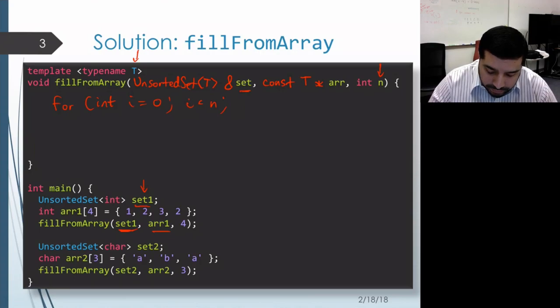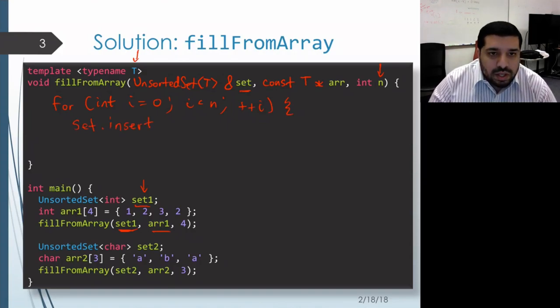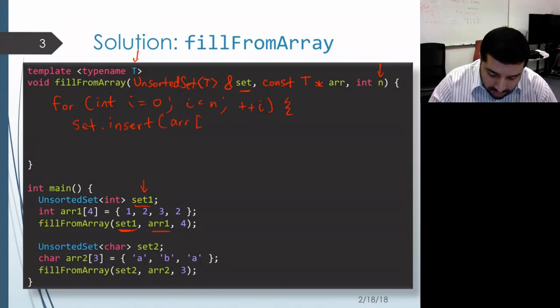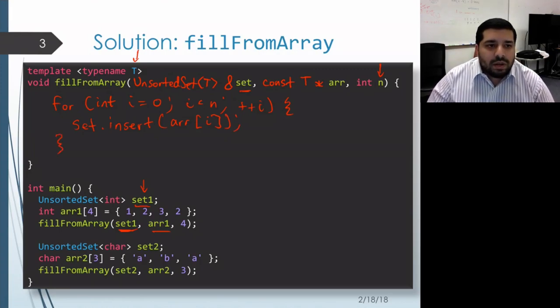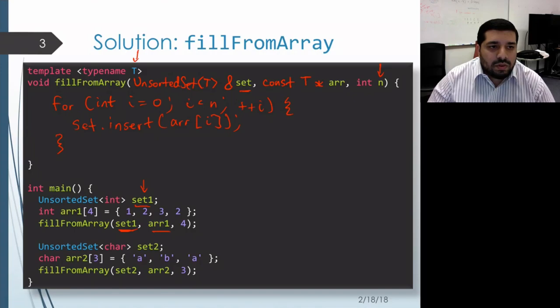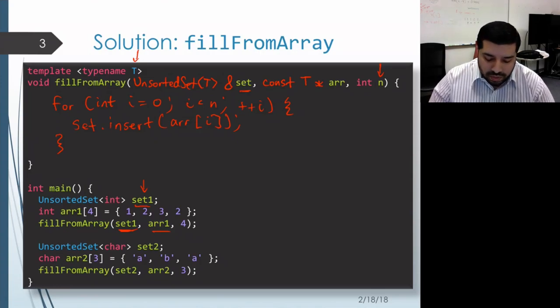Then for each element, we'll call the insert member function on our set with that element as the argument. We don't actually have to do anything further - the insert member function already takes care of duplicates. If a copy of that value already exists within the set, then it's not going to do anything further.